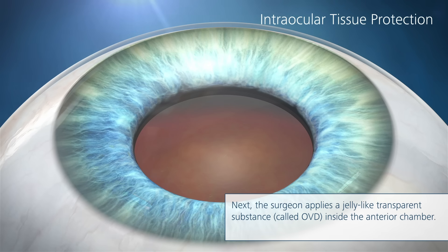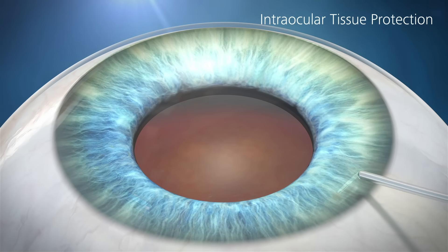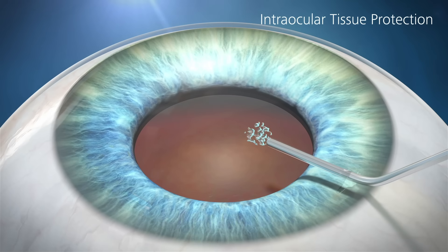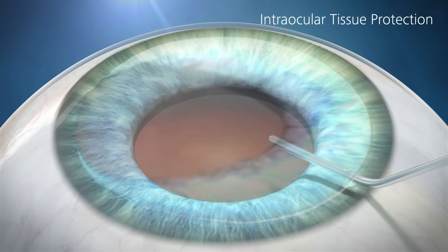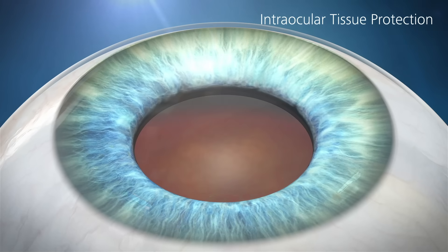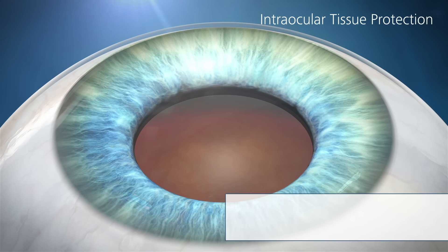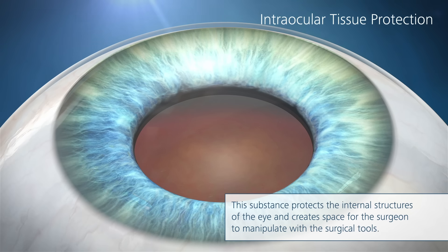Next, the surgeon applies a jelly-like transparent substance called ophthalmic viscosurgical device, OVD, inside the interior chamber. This substance protects the internal structures of the eye and creates space for the surgeon to manipulate with the surgical tools.